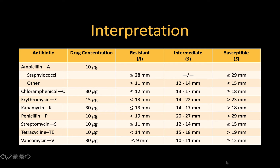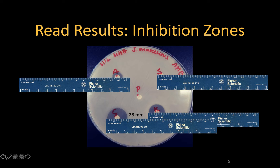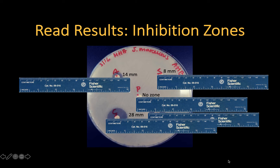Now use this table to interpret your measurements. I measured the inhibition zone as follows: kanamycin 22 millimeters, streptomycin 8 millimeters, ampicillin 14 millimeters, and for penicillin, there is no inhibition zone.